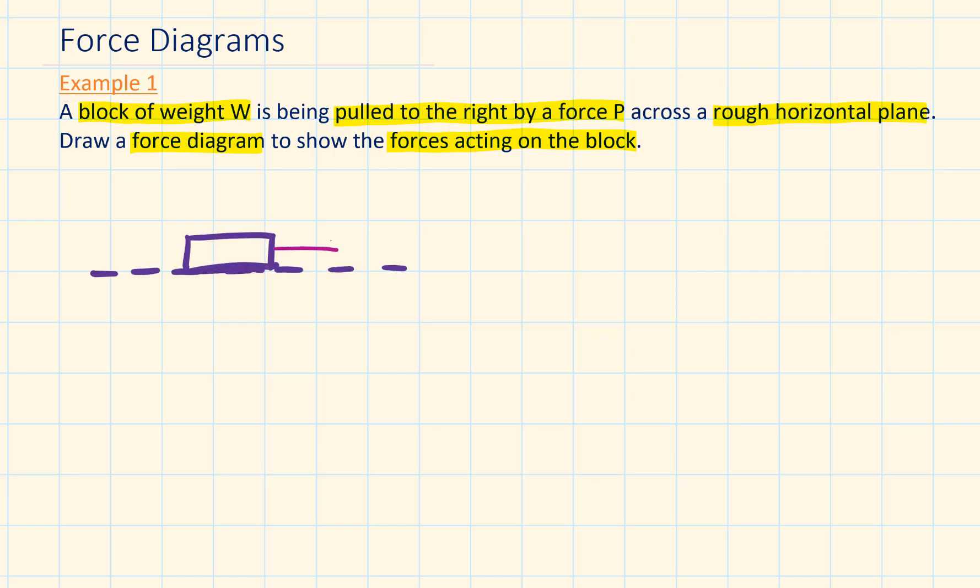P is the force pulling the block. Because the plane is a rough horizontal plane, it's going to have a resistance against the movement. Let's represent this with a capital F. We've dealt with the horizontal forces.